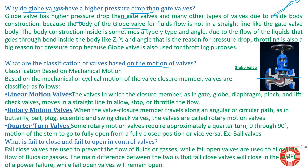The next question is: what are the classifications of valves based on their motion? Basically there are three types of valves based on their motion: linear motion, rotary motion, and quarter-turn valves. For linear motion, examples are gate valves and globe valves. When we rotate the handle of a gate or globe valve, the spindle moves up and down — the motion of the spindle is in the linear direction.